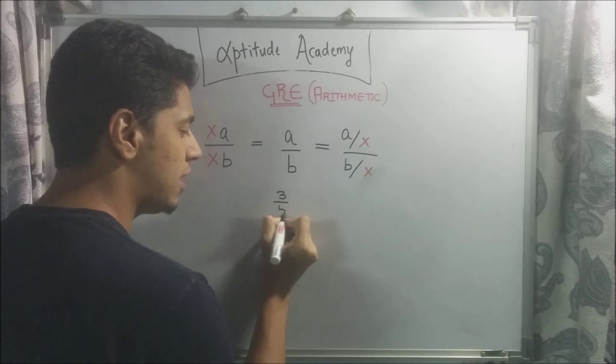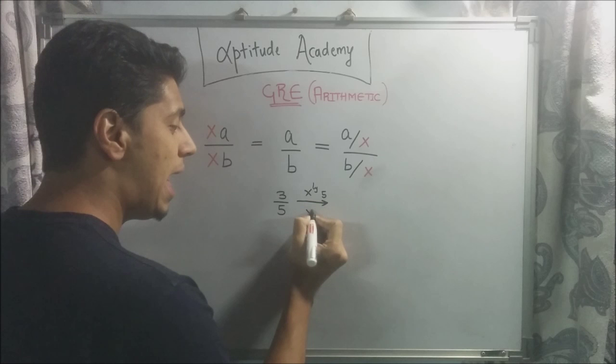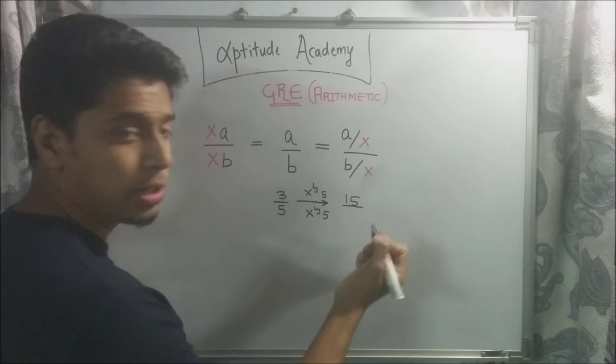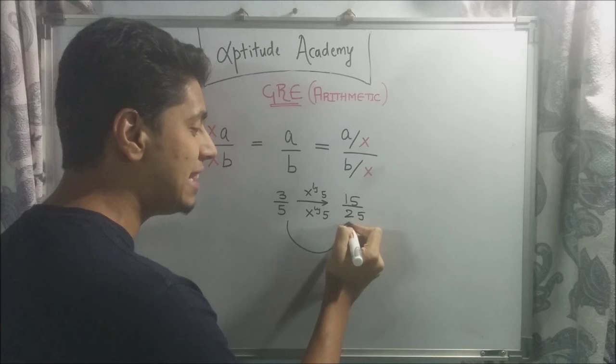So what I'm saying is let's take a fraction 3 by 5. Now if I multiply the numerator by 5 and I multiply the denominator by 5, what will I get? 3 by 5 is 15 and 5 by 5 is 25. So 3 by 5 and 15 by 25 are exactly the same.